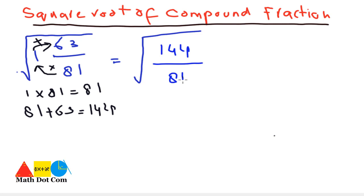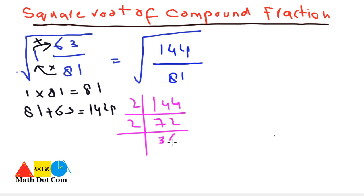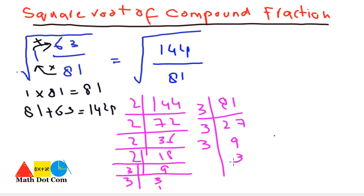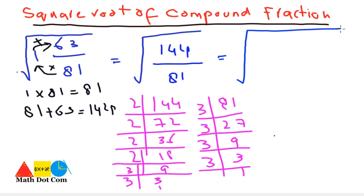Now we find the prime factors of numerator and denominator. For 144: 2 × 2 × 2 × 2 × 3 × 3. For 81: 3 × 3 × 3 × 3. We write 144 over 81 replaced by these prime factors, then make pairs: √(2×2) · √(2×2) · √(3×3) in the numerator, and √(3²) · √(3²) · √(3²) in the denominator. After cancelling square and square root, we get 2 · 2 · 3 divided by 3 · 3, which gives 12 over 9.